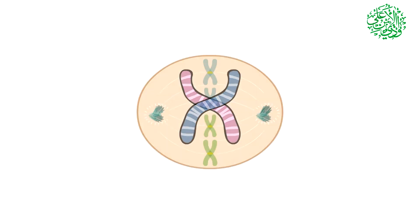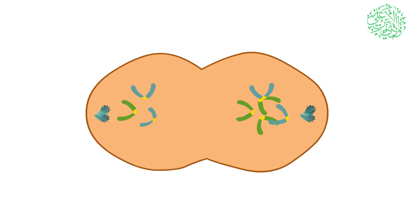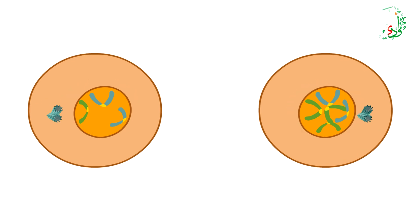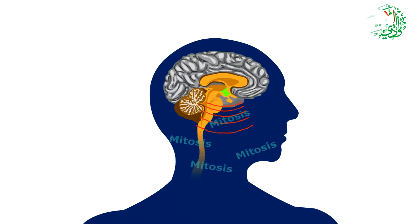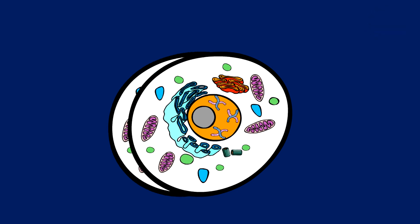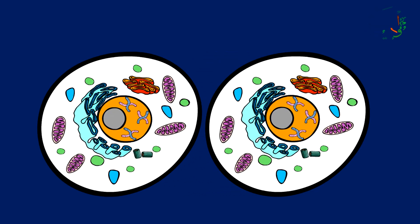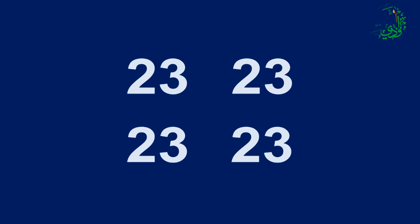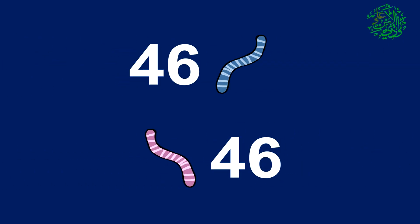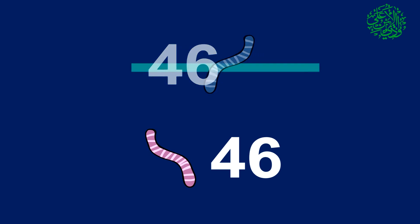The second fundamental principle of chromosomal movement is related to the cell division process. When the order of cell division is issued, second copies of all chromosomes and other organs and micro-organs inside the cell will be made. After this phase ends, four sets of 23 chromosomes — including two general 46-chromosome sets with similar bioelectromagnetic charges and poles — will be produced.